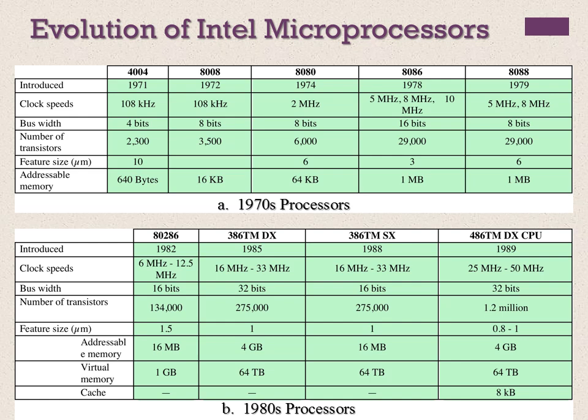Around the same time, 16-bit processors began to be developed, but it was not until the end of the 1970s that powerful general-purpose 16-bit microprocessors appeared. One very famous processor was the 8086 — another milestone achieved. The next step occurred in 1981 when both Bell and HP developed 32-bit single-chip processors. Intel introduced its own 32-bit 386 in 1985, as shown in table 2.6.